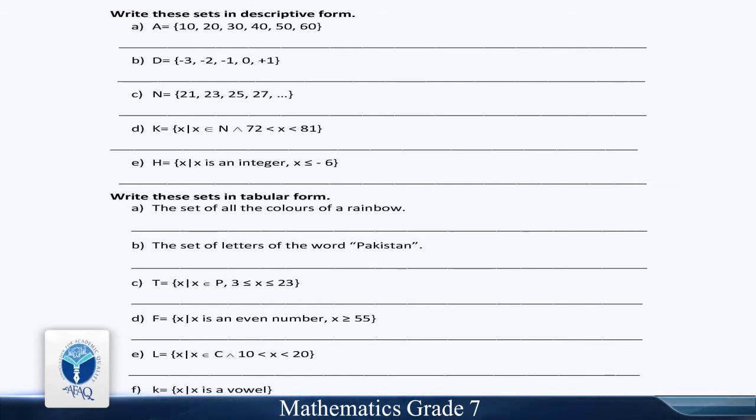Write these sets in tabular form. A: The sets of all colors of a rainbow. B: The sets of letters of the word Pakistan. Part C: T.